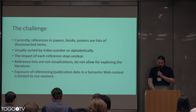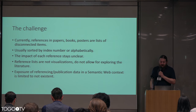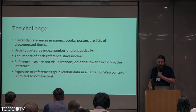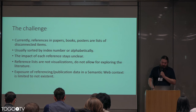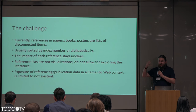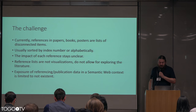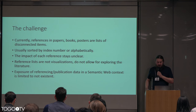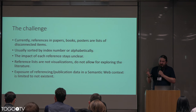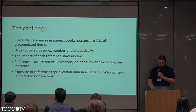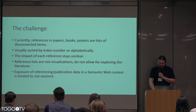The problem or challenge is that currently references in papers, books, and posters are lists of disconnected things. They're just there and usually sorted either by an index number or alphabetically. The impact of each reference is unclear just by looking at the list. The reference list is just a bunch of text — it's not a real visualization, and it makes it really difficult to explore the literature, especially if you just have links going out to PubMed and not much more. The whole thing is text and not really connected to the semantic web.